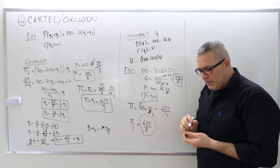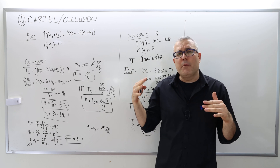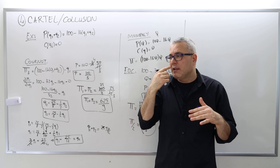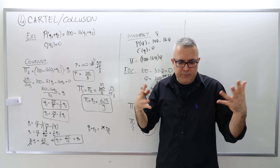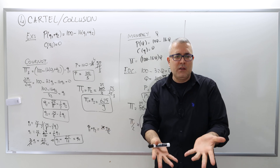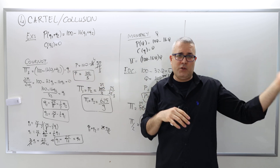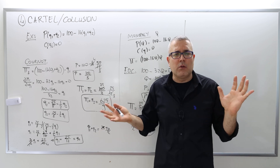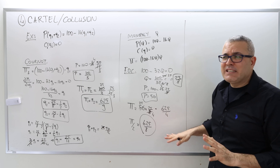They have incentive to form a cartel. But if these firms interact only once — they form a cartel, produce, sell, receive the profit, and that's it, no future — then the firms will actually have incentive to cheat.